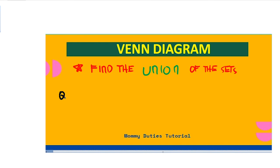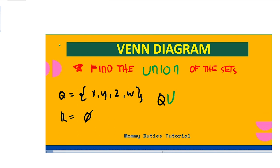What about this example? We have Set Q with elements x, y, z, and w, while Set R has a null value — no elements. How do we find the union of Q and R? The union combines all elements of the group. Since Set Q has elements, therefore the union of Q and R is the elements {x, y, z, w}.